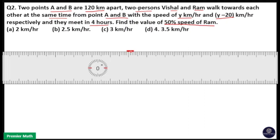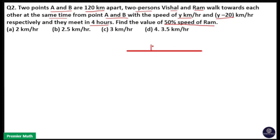Here, the distance between A and B is 120 km. Both Vishal and Ram travel towards each other. That is, they both travel in opposite directions. They will meet somewhere between A and B in 4 hours. So the meeting time is 4 hours.